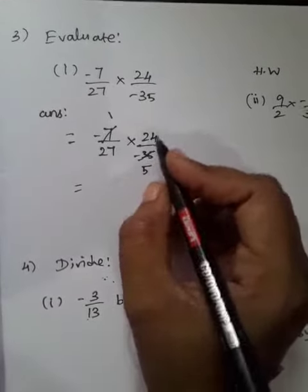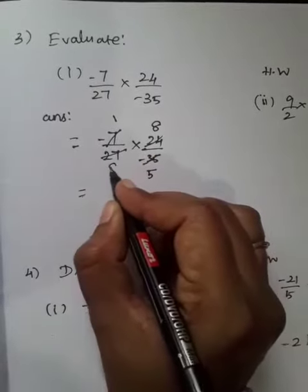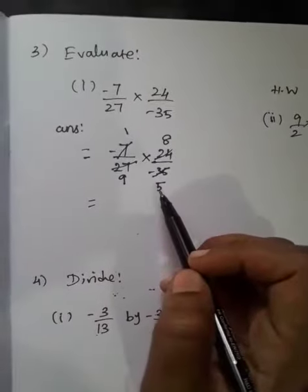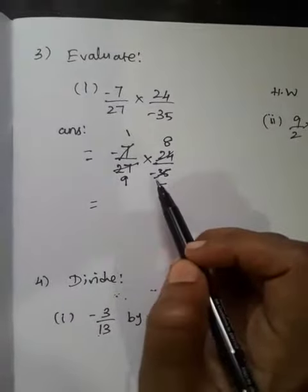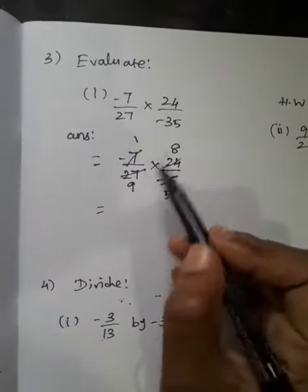So we get 8/9 and 1/5. Now, 1 and 5 cannot cancel because they will come only in the first table, no other table. 8 and 9 also cannot be cancelled because both numbers will come only in the first table, not in any other common table.